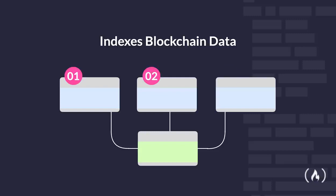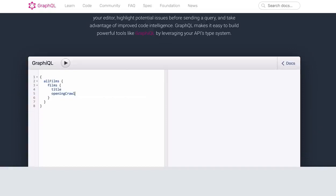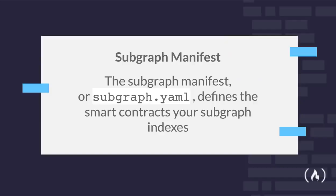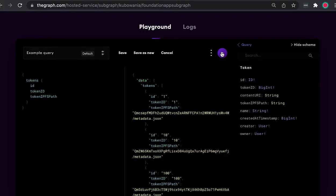This is where The Graph comes in. The Graph solves this problem by indexing blockchain data. Once blockchain data is indexed, The Graph creates a subgraph that can be queried with your standard GraphQL API. Subgraphs are just open APIs. The Graph knows which data to index for your subgraph based on something called your subgraph manifest that you define. So now, thanks to the subgraph manifest and The Graph, you are able to query data on the blockchain and our problem is solved. We can even view the results of our queries in a neat UI. Let's have a deeper look at subgraphs and writing subgraph manifests in the next section.